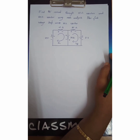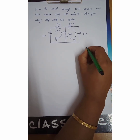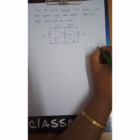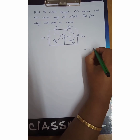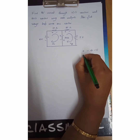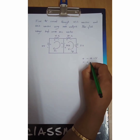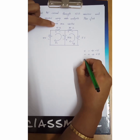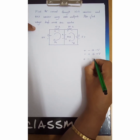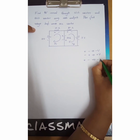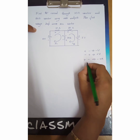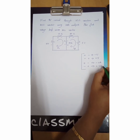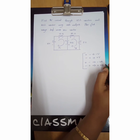Now for the sign convention of applying KVL: whenever you move from positive terminal to negative terminal of a battery source, it is a voltage drop, so you take minus V. Whenever you move from negative to positive, it is a voltage rise, so you take plus V. For a resistor, moving from plus to minus is a voltage drop, so you take minus I×R. Moving from minus to plus is a voltage rise, so you take plus I×R. With these four basic rules, we apply KVL to the given circuit.